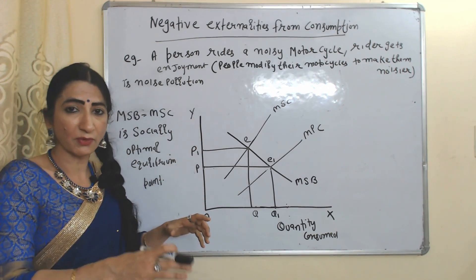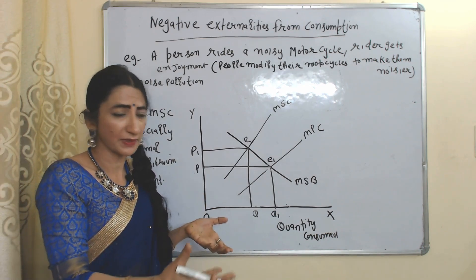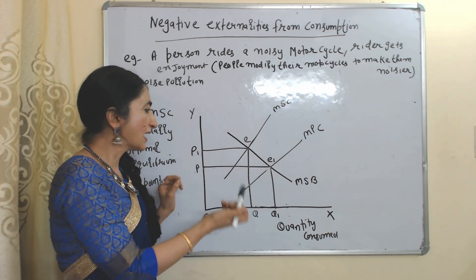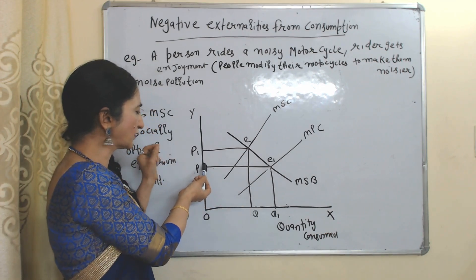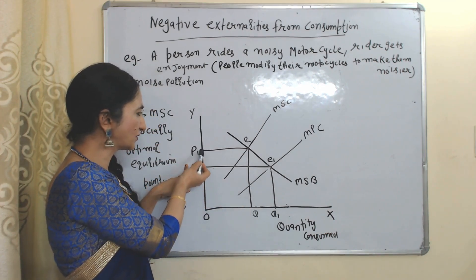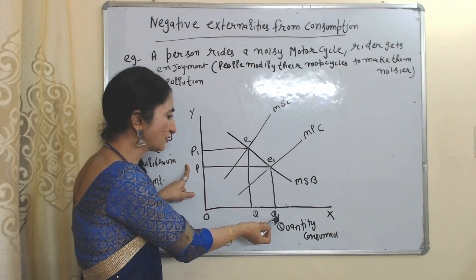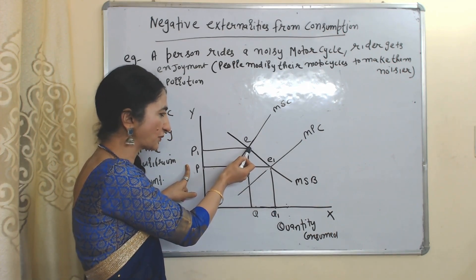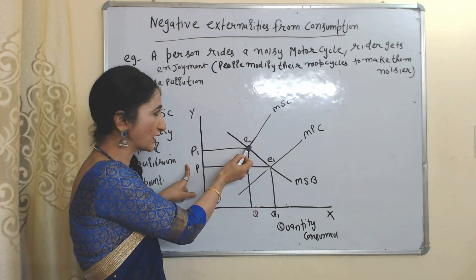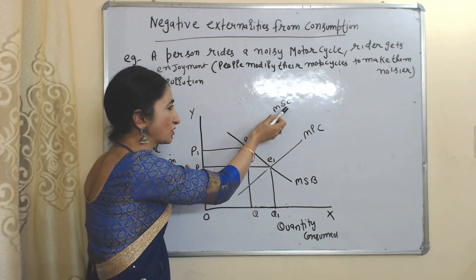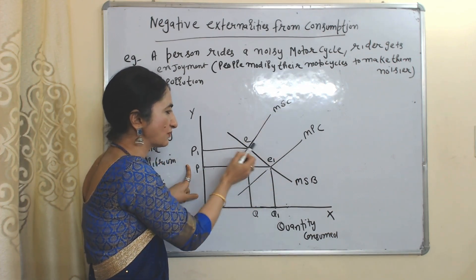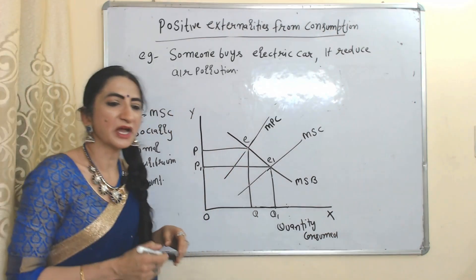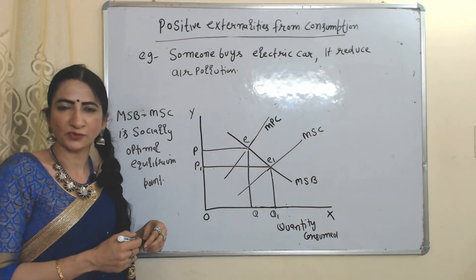At point E, marginal social cost is more than marginal social benefit, so E is not the socially optimum equilibrium point. That's why government intervention is a must. The government will impose a fine or taxes on people creating negative consumption externality. As a result, their cost or price will increase from P1 to P2 and their consumption will fall from Q1 to Q. The new point E will be called the socially optimum equilibrium point, where marginal social cost equals marginal social benefit.